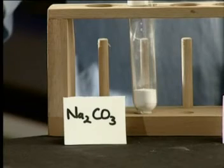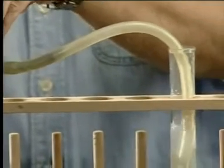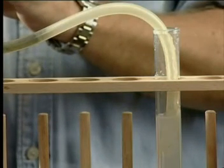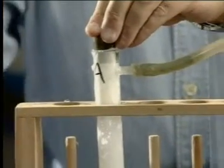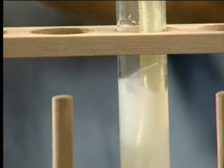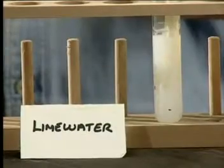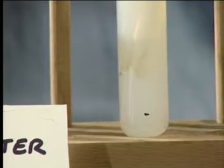If the clear lime water turns milky, then we have a positive test for carbon dioxide. We will use a sidearm test tube containing a sample of dry sodium carbonate. A rubber tube is attached to the end of the sidearm so that the gas released can be bubbled through the solution of clear lime water. Now, add a little dilute hydrochloric acid and allow the gas to bubble through the lime water solution. You should be able to observe that the lime water is turning milky.